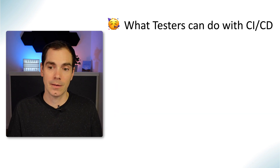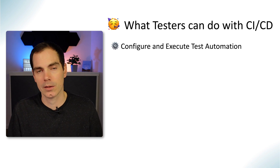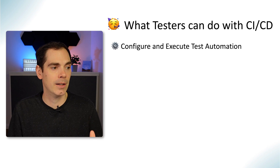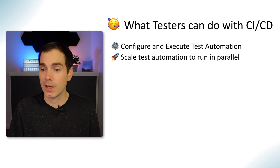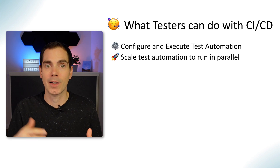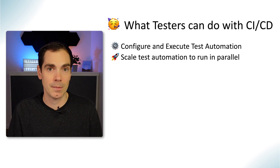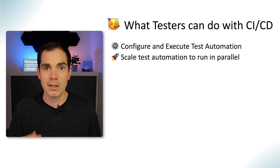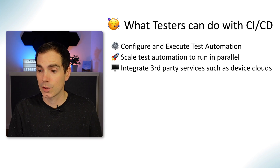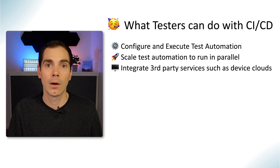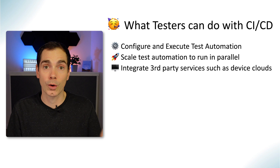What can testers do with CI/CD? We can configure and execute test automation. We can define different staging systems, testing frameworks, and testing types to execute at specific stages of the process. We can scale test automation to run in parallel — using a cloud provider or your own browser configuration. You can orchestrate all the tests running on the CI/CD system to run on a specific set of browsers and devices. You can also integrate third-party services such as SauceLabs, BrowserStack, LambdaTest, and pCloudy in order to achieve this scalability.